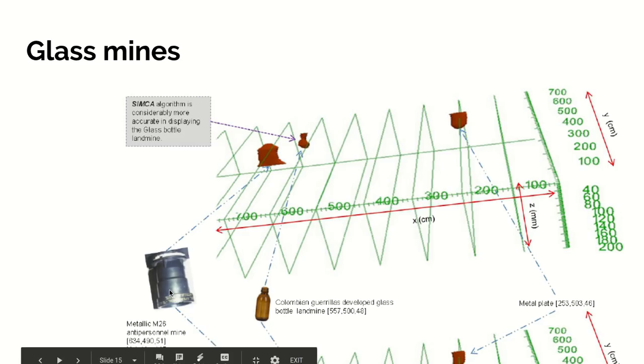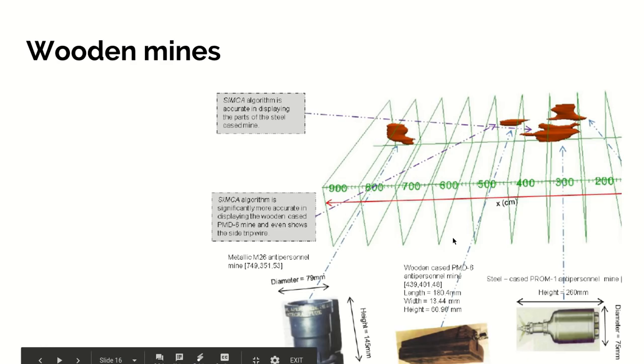Again, this is another metallic anti-personnel mine of a different design. This is just a metal plate that was placed in the ground for test purposes for comparison. Even a wooden mine here is detected successfully.